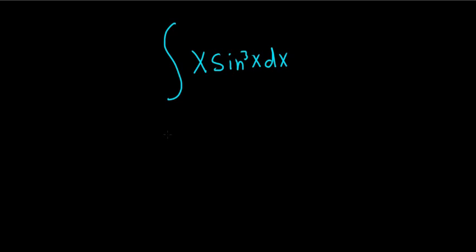Hey, what's up YouTube? So we have the integral of x times sine cubed of x. If it was like x sine x, we could use tabular or parts. If it was x times sine squared, we can use an identity to reduce it to something easier. But it's sine cubed, so what do we do?